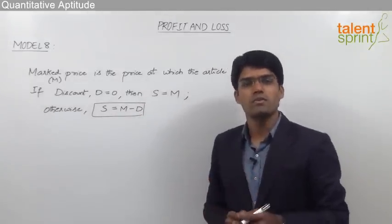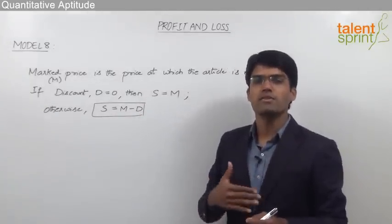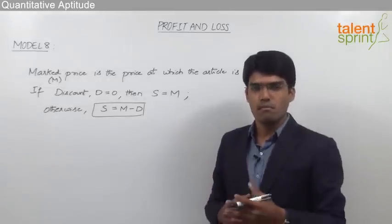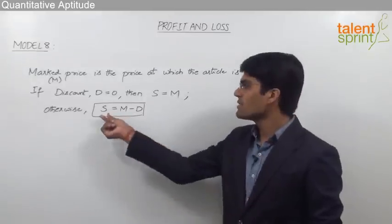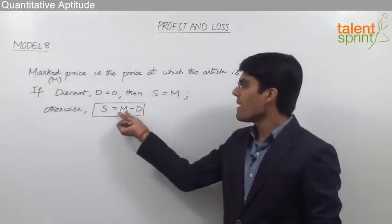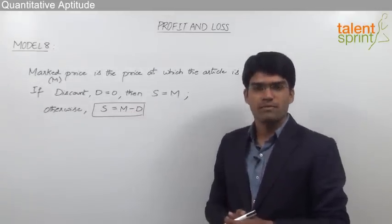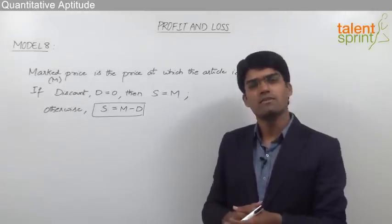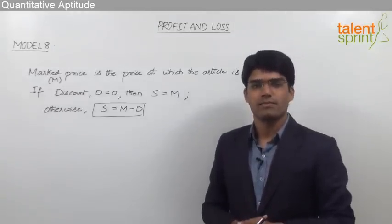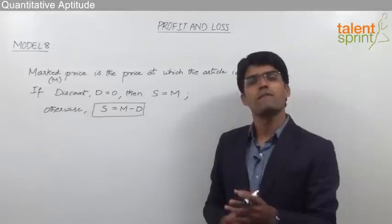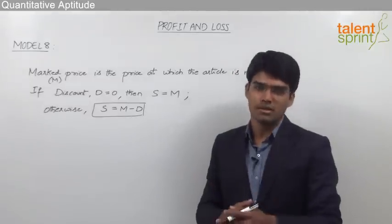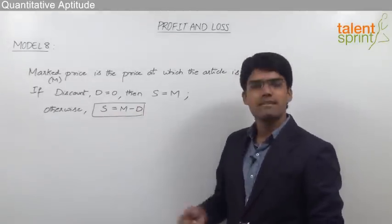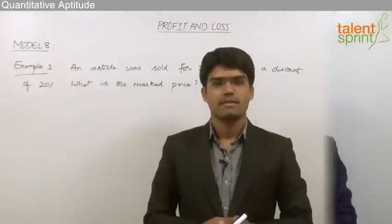Whenever there is no discount, selling price is the same as marked price. But when there is a discount, selling price should be taken as marked price minus discount. Remember that discounts are generally given in terms of percentage, and this percentage of discount should always be taken on the marked price. Then we can find the selling price as marked price minus discount.